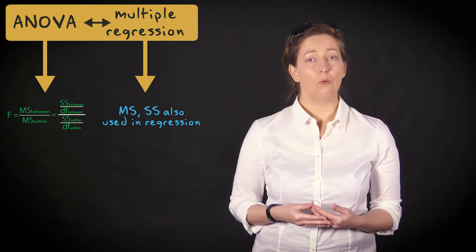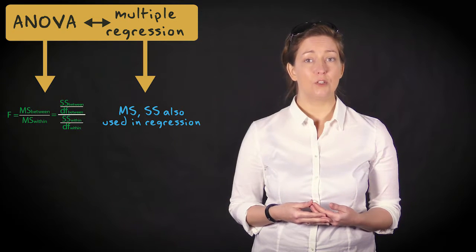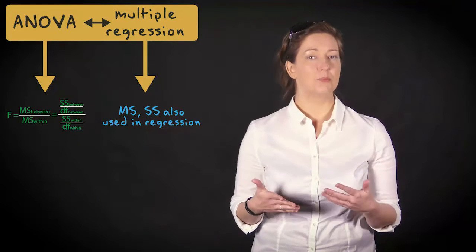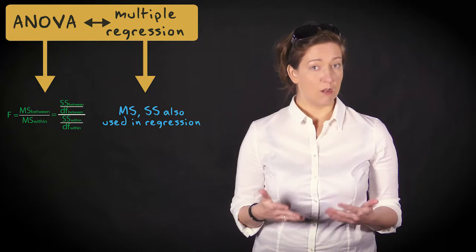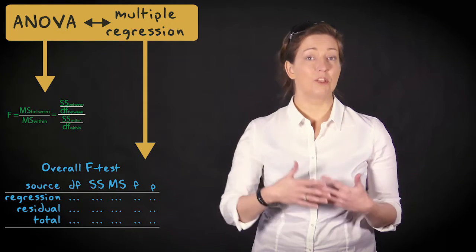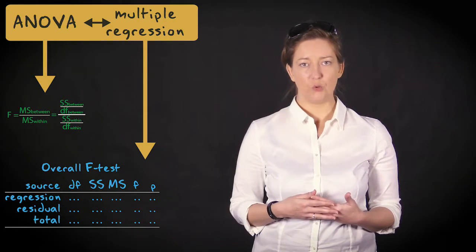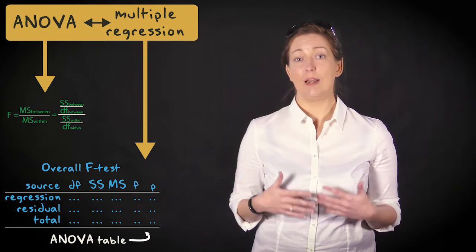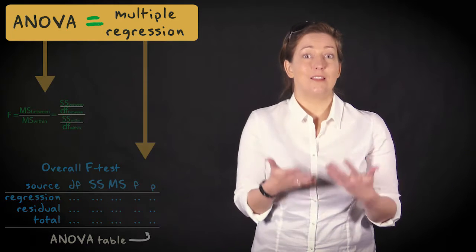You may have noticed that the between and within group variances are expressed in terms of sums of squares and mean squares, which we also use in multiple regression. It's also not a coincidence that the table of mean sums of squares and sums of squares in multiple regression is often referred to as the analysis of variance table. In fact, multiple regression and analysis of variance are technically the same.